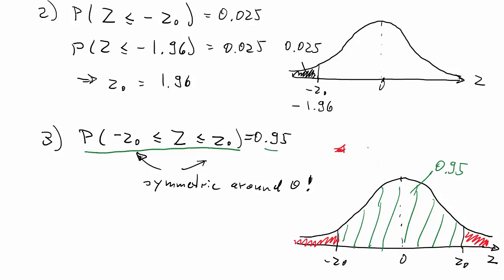So we know that together, these two red bits should be equal to 5%, because all areas added together should be 1. But since we are looking at a symmetric problem, we also know that each of these areas should be 2.5%, half of 5%.